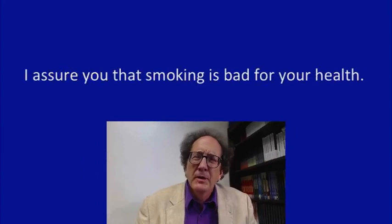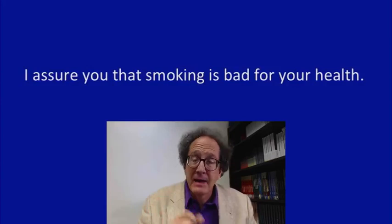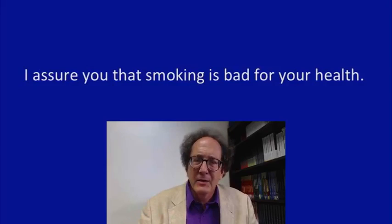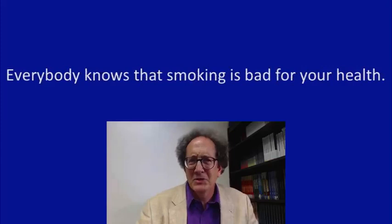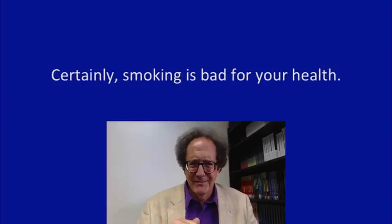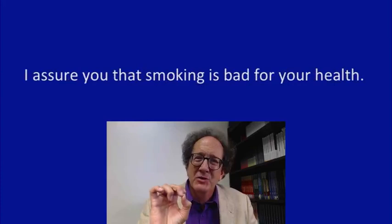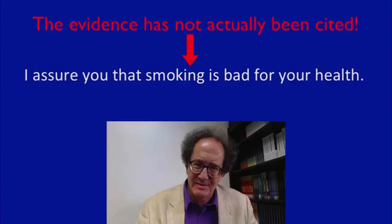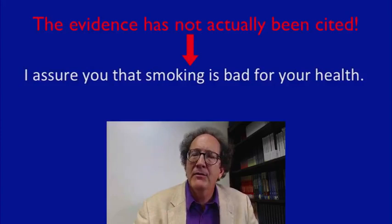Here's an example. I assure you that smoking is bad for your health. If I say 'I assure you,' I'm trying to get you to accept that claim on my authority. I might have some reason — namely, I've read the US Surgeon General's report, which cites the scientific evidence. But notice I don't actually say it. When I say 'it's obvious,' or 'everybody knows that smoking is bad for your health,' or 'certainly, clearly smoking is bad for your health,' I'm trying to get you to accept that premise without citing the Surgeon General or anybody. I haven't cited the evidence; I simply have indicated that I do have evidence and a reason to believe it, but I haven't given you what the reason is.